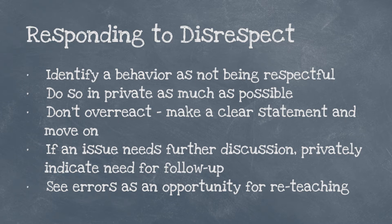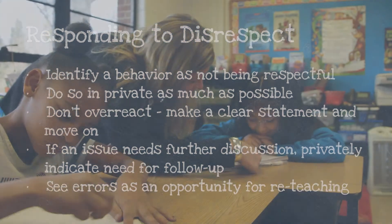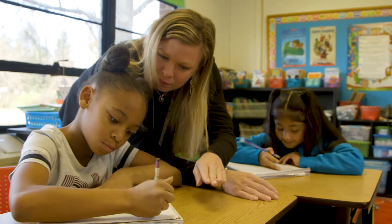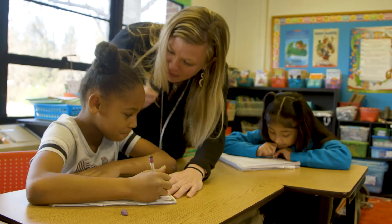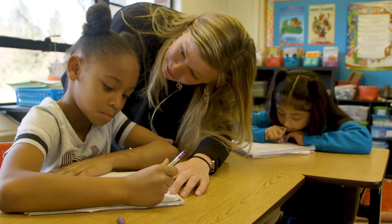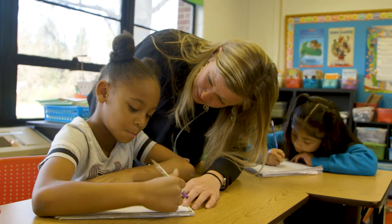Simply identify the behavior as disrespectful and provide the standard consequence. It's best not to do this in front of a group, as it provides attention and takes focus off instruction. Be careful not to overreact, leading to escalation. If the student continues, provide a single reminder, then take the student aside. The student should be offered a choice to engage in respectful behavior or choose a larger consequence. Apologies or restitution can be discussed later, not in front of an audience.